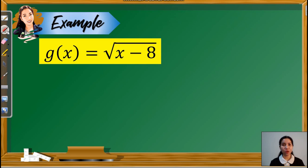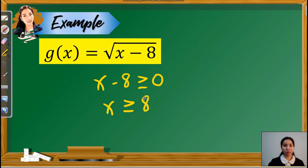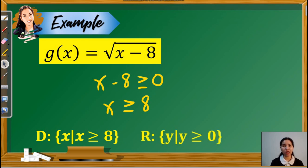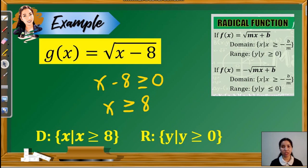Next example, we have g(x) is equal to the square root of x minus 8. Since g(x) has a radical sign, its radicand must be non-negative. So we set x minus 8 greater than or equal to 0, and solving for x gives x greater than or equal to 8. With this, our domain contains values of x such that x is greater than or equal to 8. As for the range, since we cannot have a negative radicand, the output is always non-negative. Therefore, the range is y greater than or equal to 0.